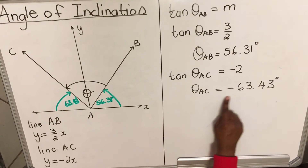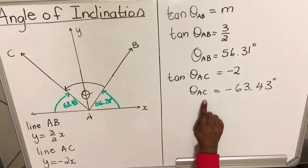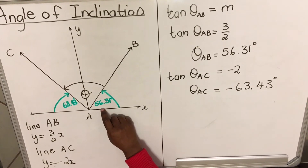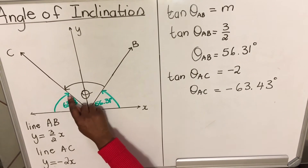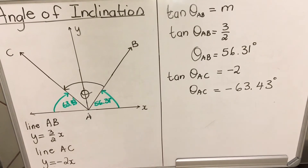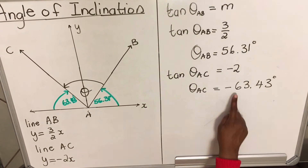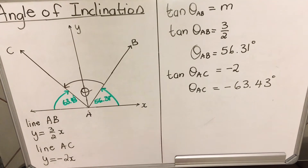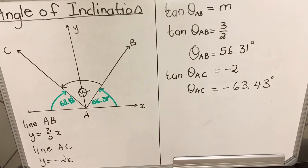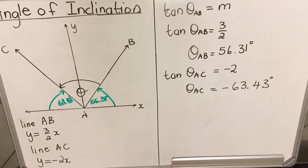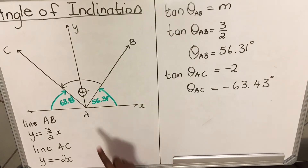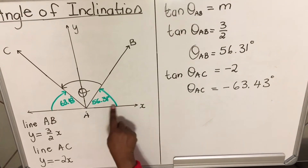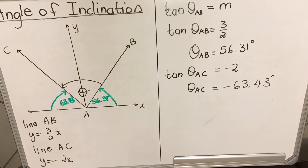This angle that you found is not the angle of inclination, because the angle of inclination is from the x-axis to the line going anti-clockwise. When you get a negative angle, you're getting the clockwise version. In this question, they didn't ask for the angle of inclination, so don't be confused by the negative — just understand what it means.